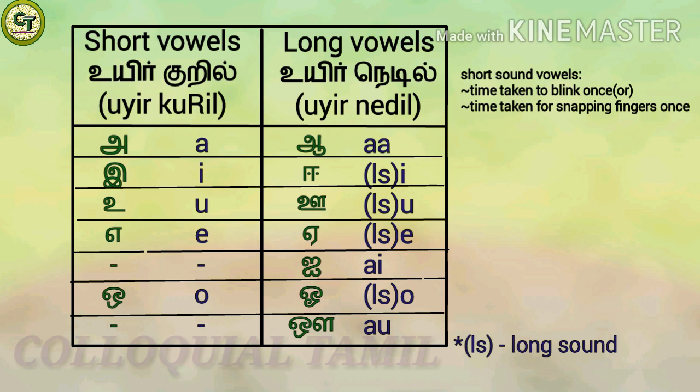In Tamil, long sound vowels are called 'weir nedil'. There are seven long sound vowels. The time taken to pronounce a long sound vowel is twice the time of short sound vowels.